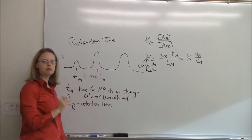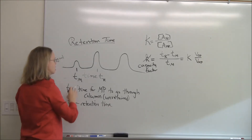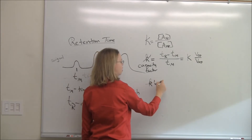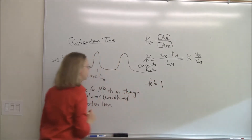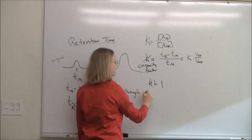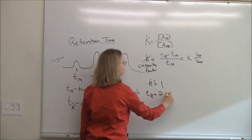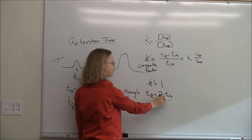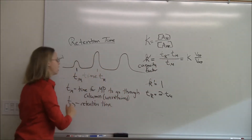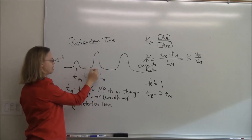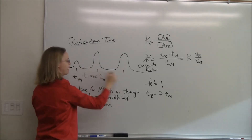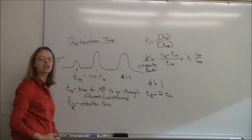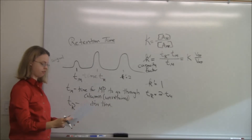K-prime is kind of a linear thing. If you have a K-prime of 1, that means your retention time is 2 times T-M — if you plug it in: (2·T_M − T_M) / T_M = 1. In this chromatogram, these peaks are about equally spaced, so that's about K-prime equals 1. If the next peak is equally spaced again, that would be a K-prime equal to 2. So it's a linear thing on down the line.